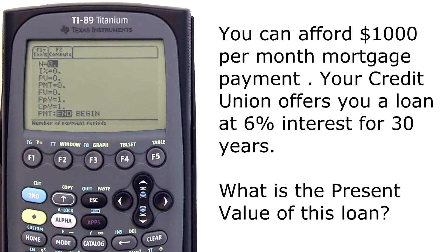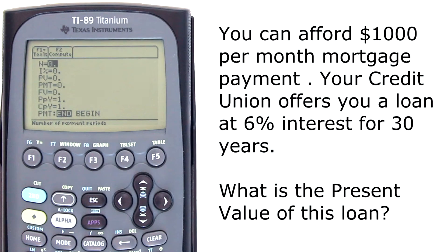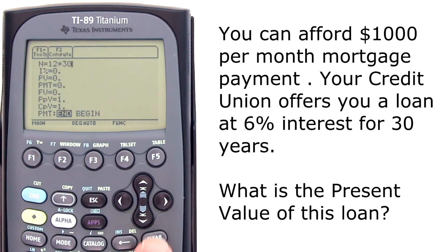Let's enter the data. N equals the total number of compoundings over the entire period — in this case over 30 years. Because the payments are monthly, we assume the compounding is monthly. So enter 12 compoundings per year times 30 years, and press the enter or the down arrow key.